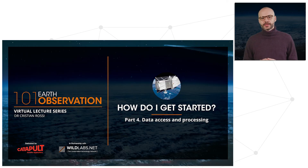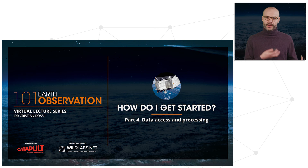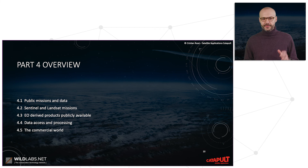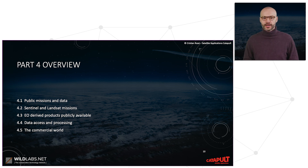Finally, the last part of our series is how do I actually get started. So once we have all this information about remote sensing and Earth Observation, where do I get data? Where do I process data? We will see this in five different short videos, which will cover public missions and data. We will see specifically Sentinel and Landsat missions, and we will also have a look at Earth Observation derived products which are publicly available, followed by data access and processing. And finally, we will have a look at the commercial world.